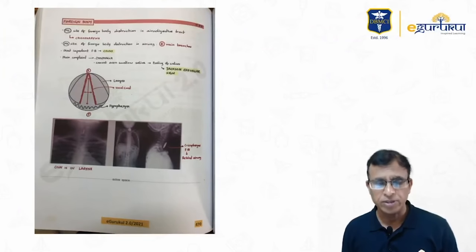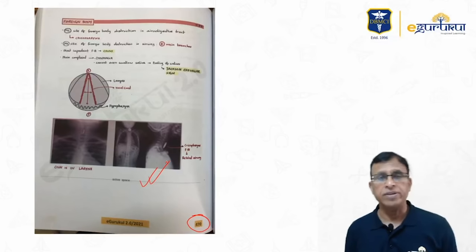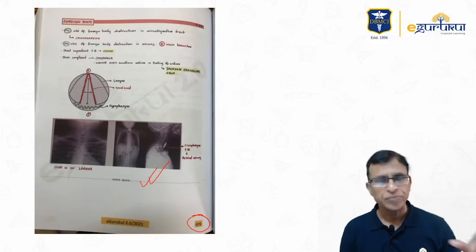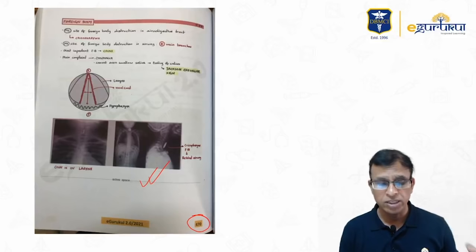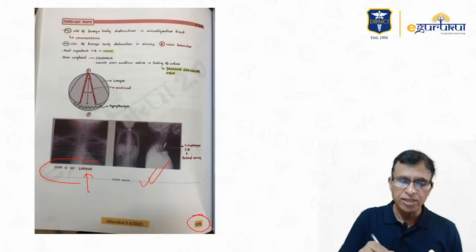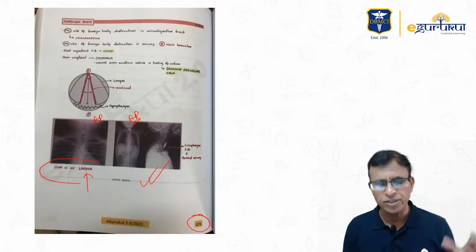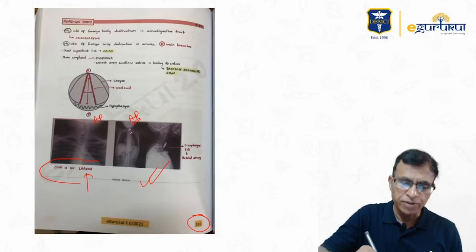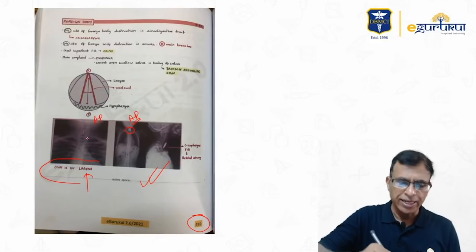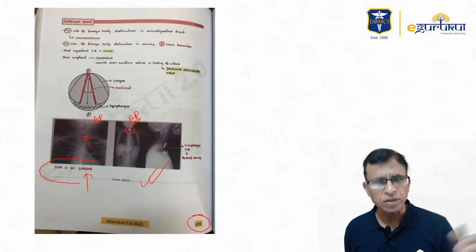The reference from the eGrukul app on page 470 shows exactly the same image. In AP view, a coin in the larynx shows the side view, whereas in the esophagus or trachea it shows the front face. The lateral view distinguishes between esophagus (posterior, near vertebra) and trachea (anterior). This has been explained clearly in the video in the app.